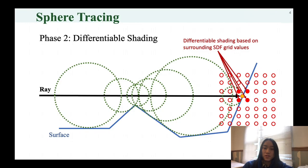So the derivative of a given pixel with respect to rendering parameters only depends on a local neighborhood of 8 SDF samples.